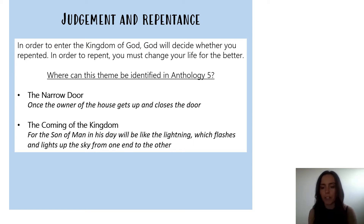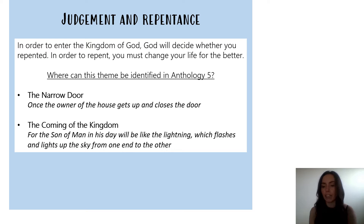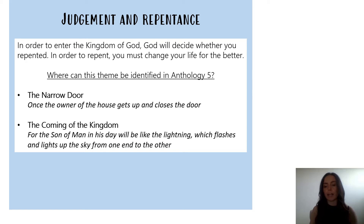The second passage is the Coming of the Kingdom of God, where we get the line, 'for the Son of Man in his day will be like the lightning, which flashes and lights up the sky from one end to the other.' The point of this passage is that we can't know when the kingdom of God is going to appear. It's going to be so quick and almost unexpected in its arrival that what we must do is repent in the present moment. We have to live as if the kingdom could come at any point, and it emphasises that we need to repent naturally as we go through our lives. We cannot wait for a point when we want to repent later down the line.